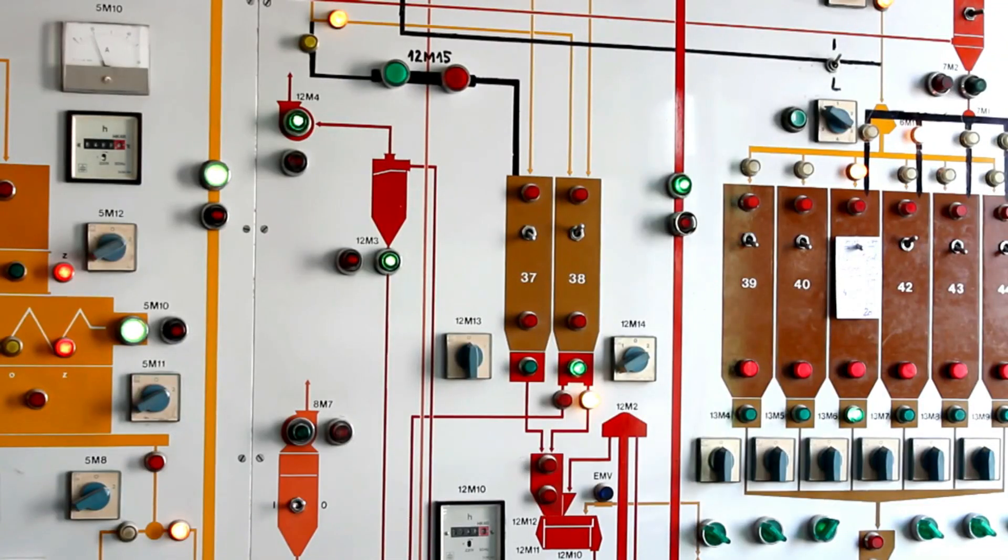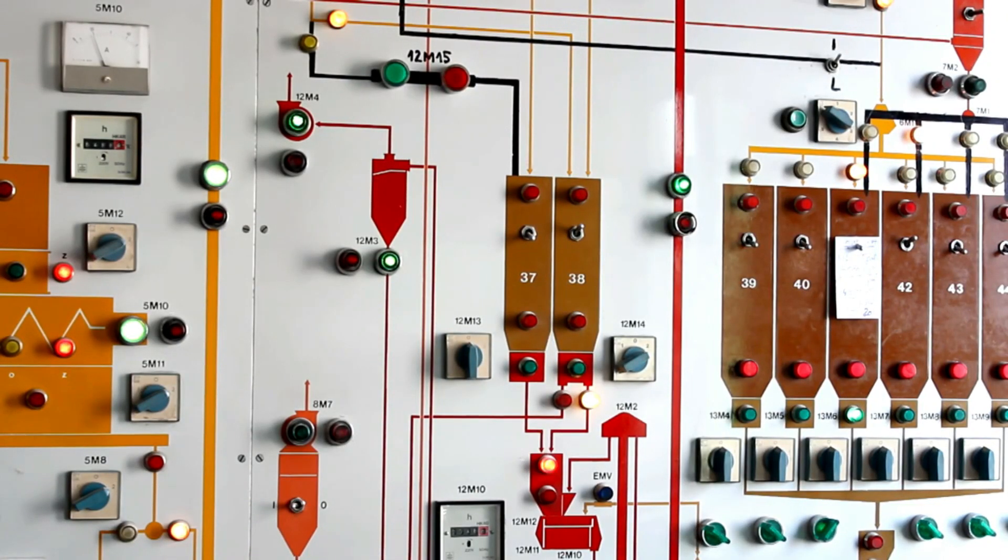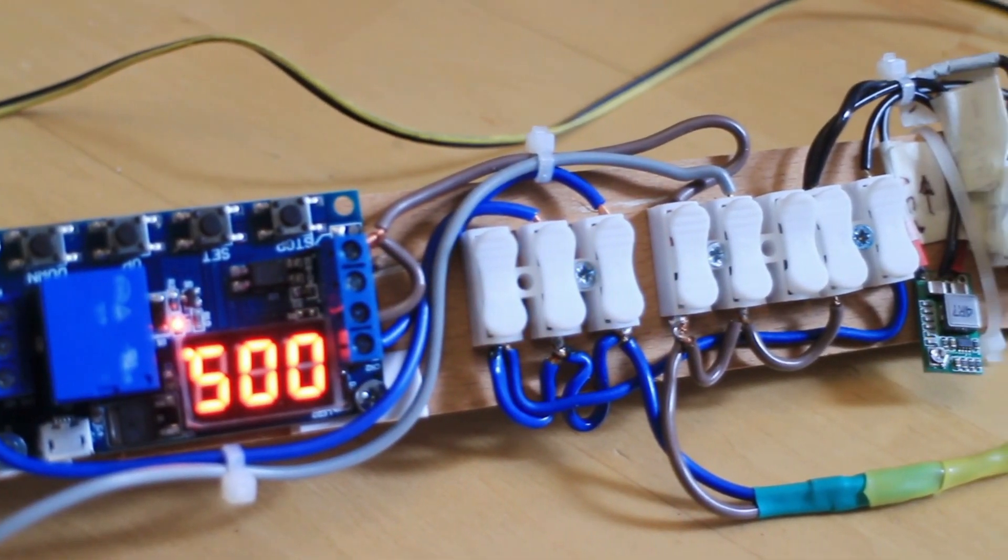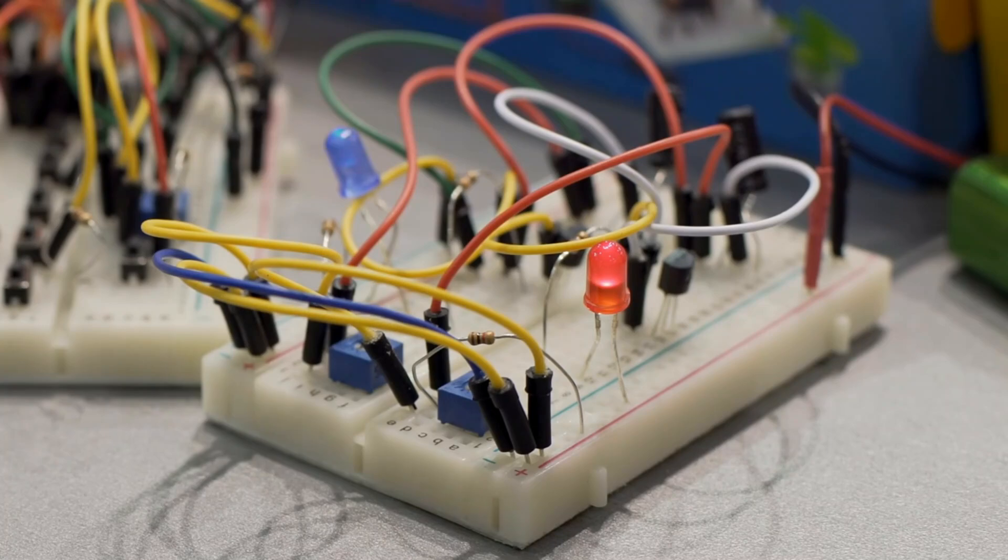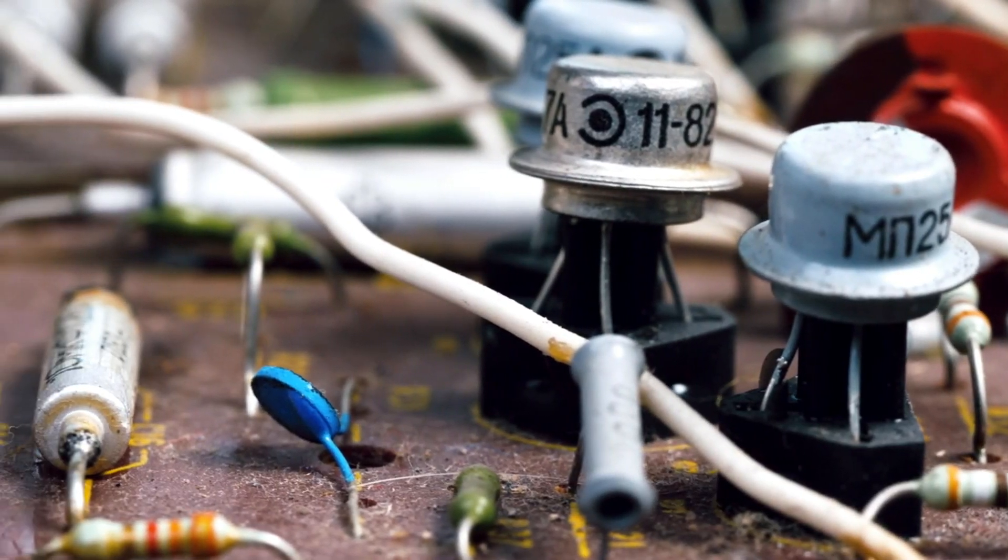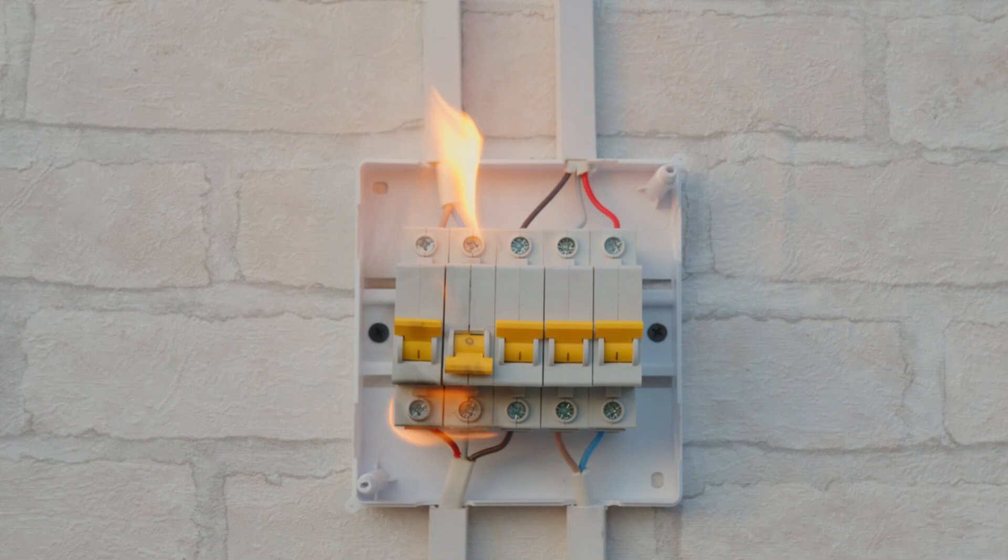The voltage rating of a fuse indicates the maximum voltage it can safely interrupt. The fuse's voltage rating should be equal to or higher than the circuit's operating voltage. The breaking capacity, also known as interrupting rating, is the maximum current that a fuse can safely interrupt without causing an explosion or fire.